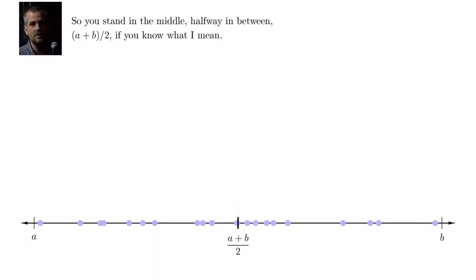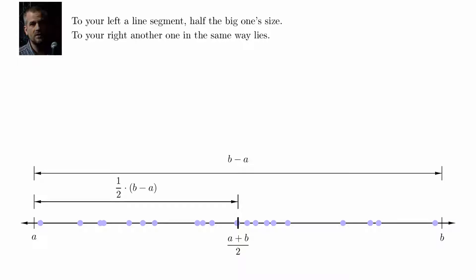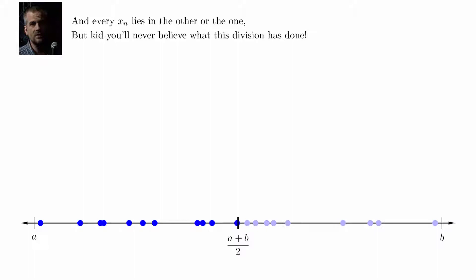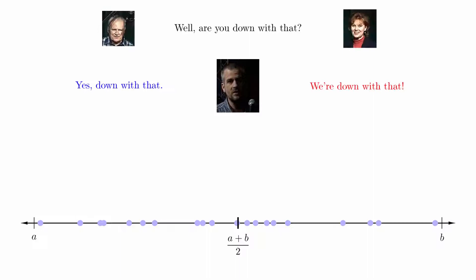So you stand in the middle, halfway in between, A plus B over two, if you know what I mean. To your left a line segment, half the big one's size. To your right another one, in the same way lies. And every X_n lies in the other, or the one, but you'll never believe what this division has done. You see, if every X_n lies in one of these two, then in one, or the other an infinite dude.